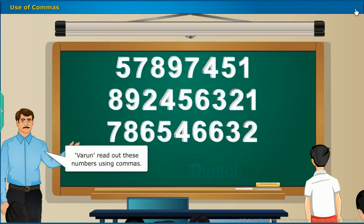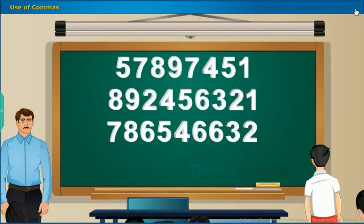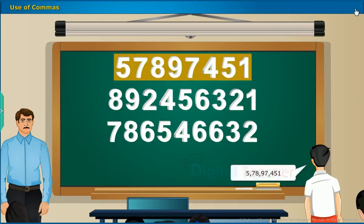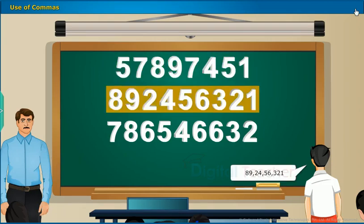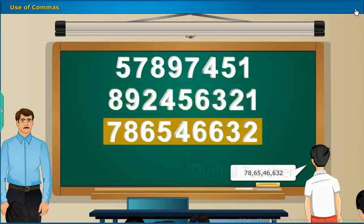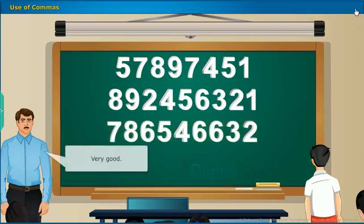Varun, read out these numbers using commas: Five crore 78,97,451, Eighty-nine crore 24,56,321, Seventy-eight crore 65,46,632. Very good.